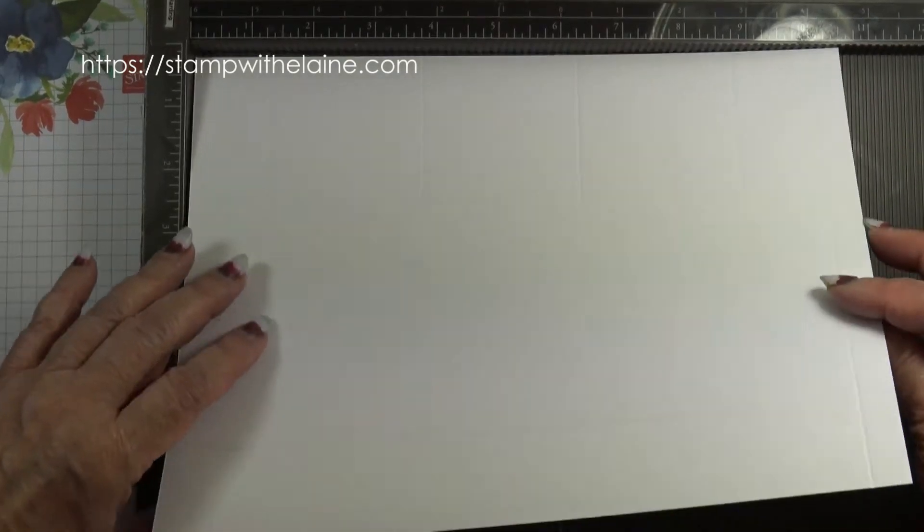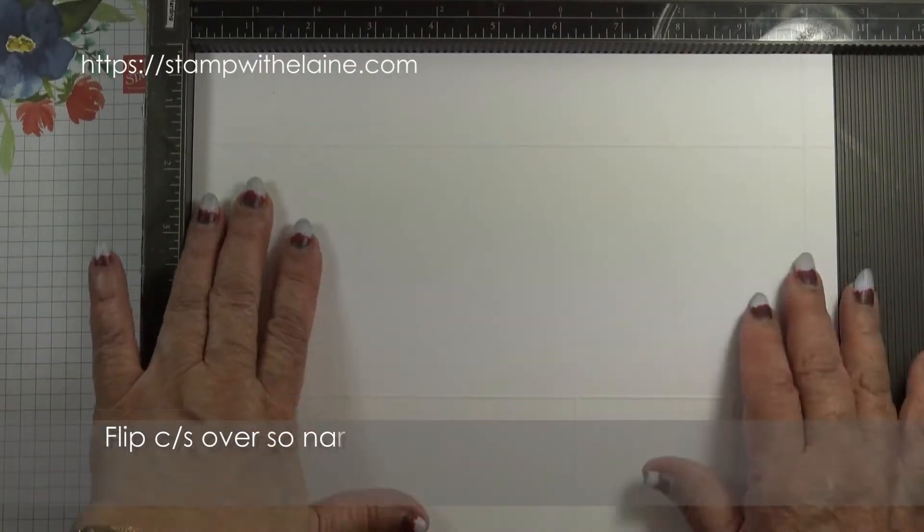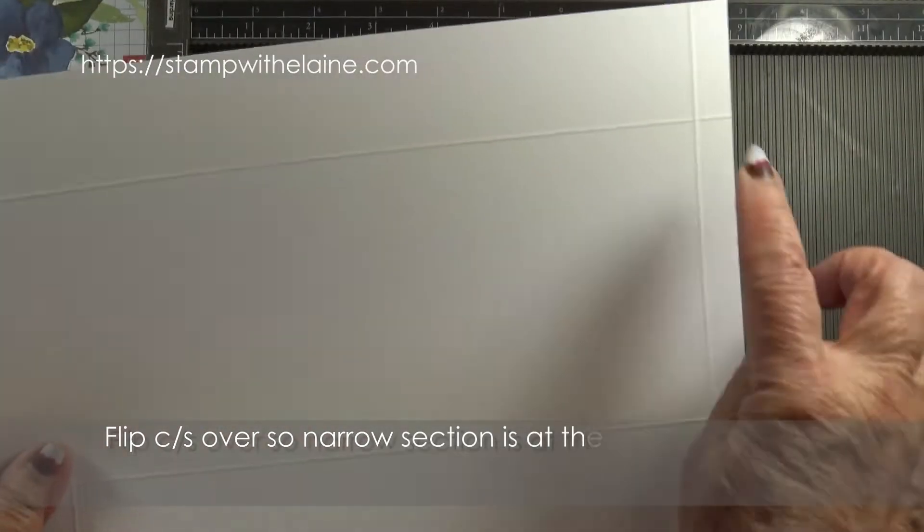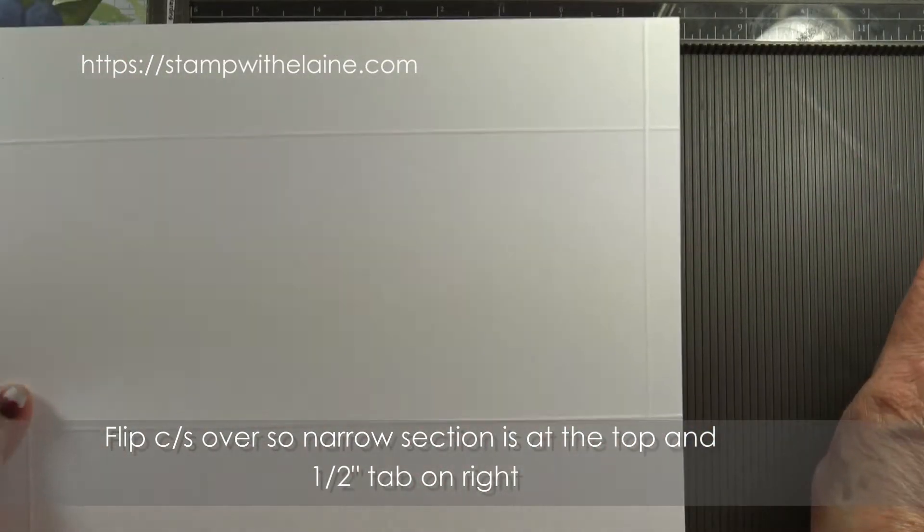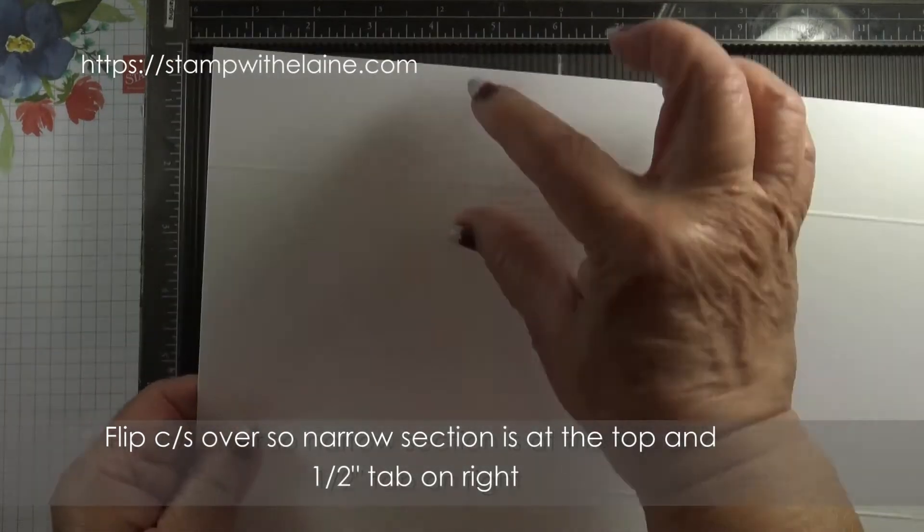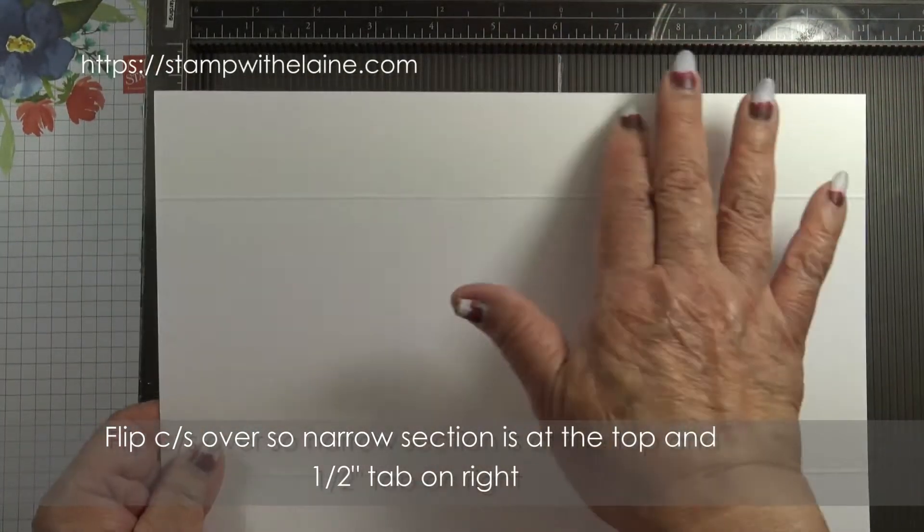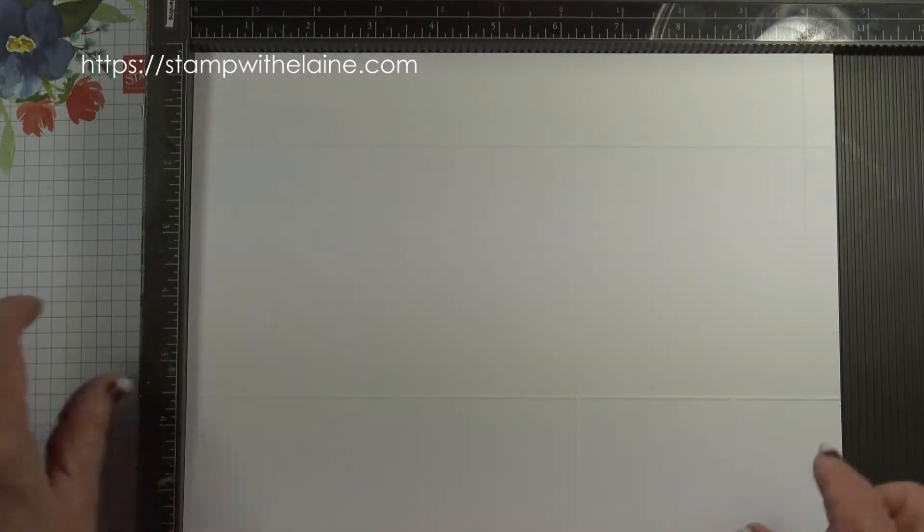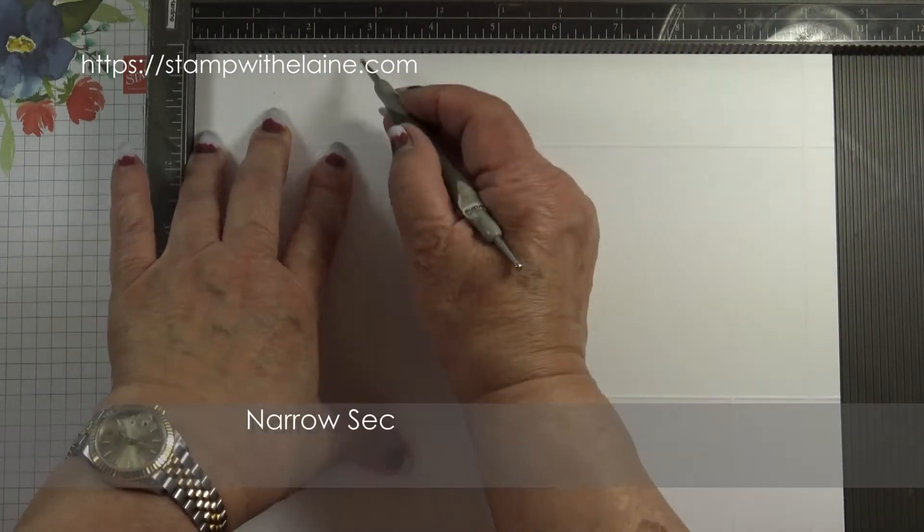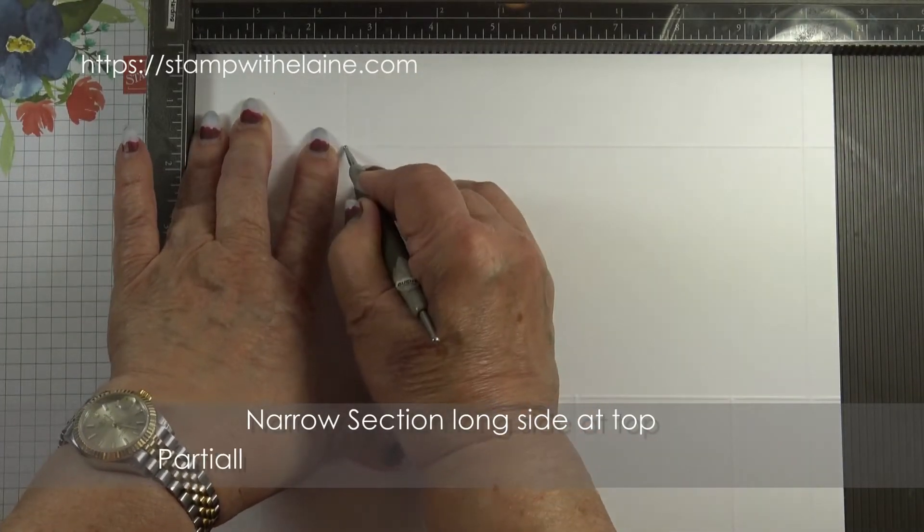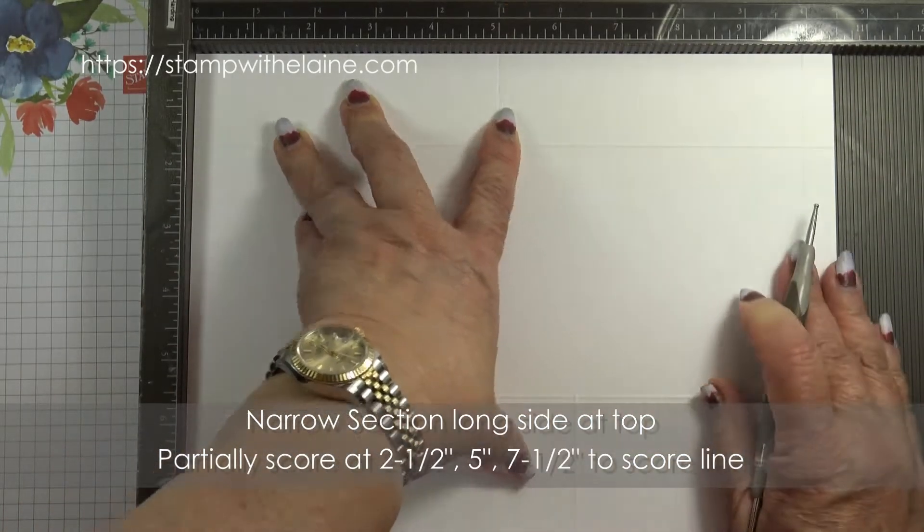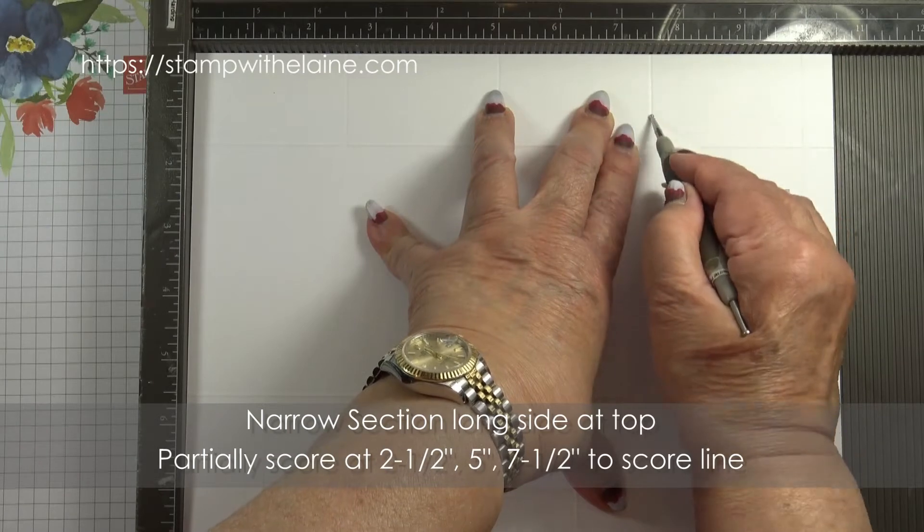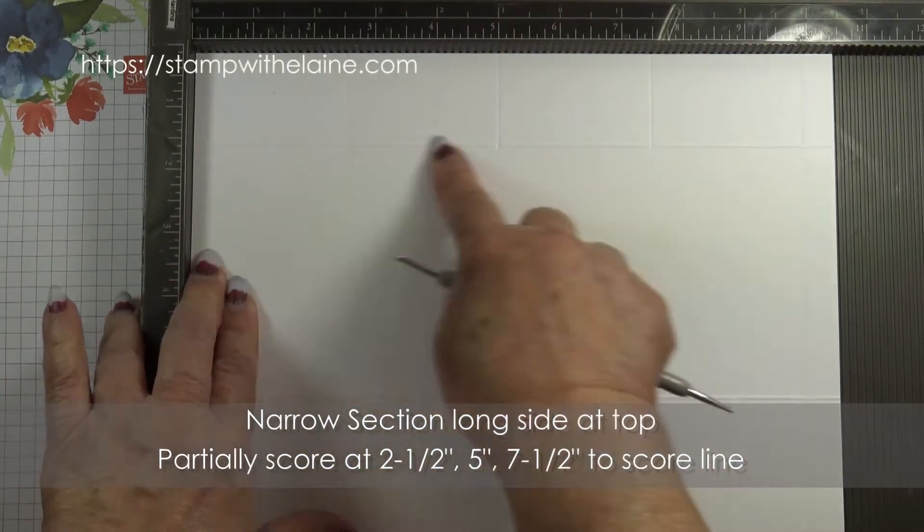For step three you flip the cardstock over so that the half inch score line all the way down is on your right, and the narrow scored section is at the top. Then you want to score at two and a half inches, five inches, and seven and a half inches. All partially scored.